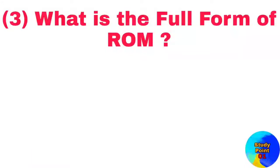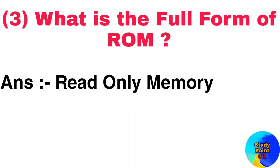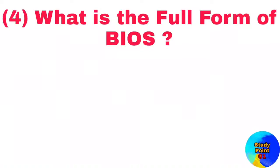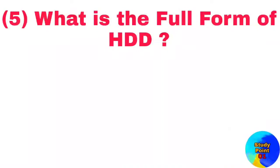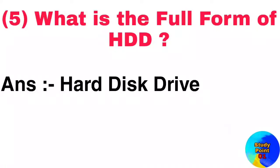Question number 3: What is the full form of ROM? Answer: Read only memory. Question number 4: What is the full form of BIOS? Answer: Basic input-output system. Question number 5: What is the full form of HDD? Answer: Hard disk drive.